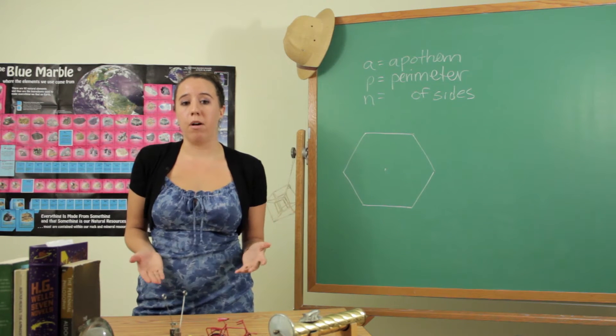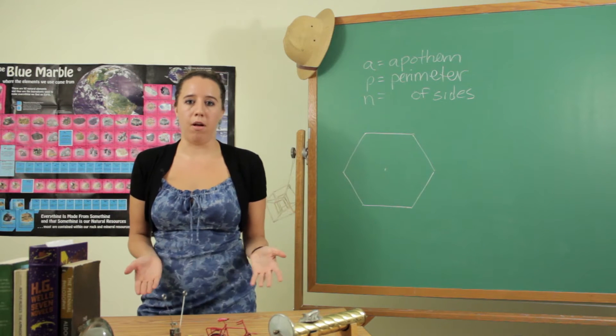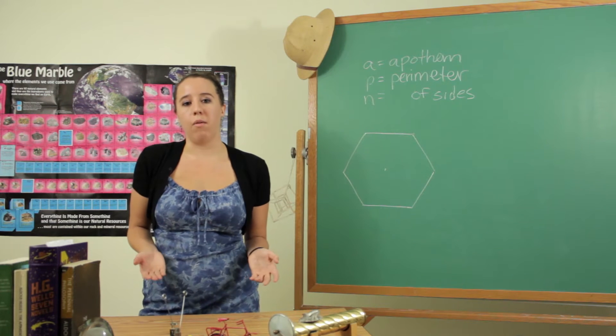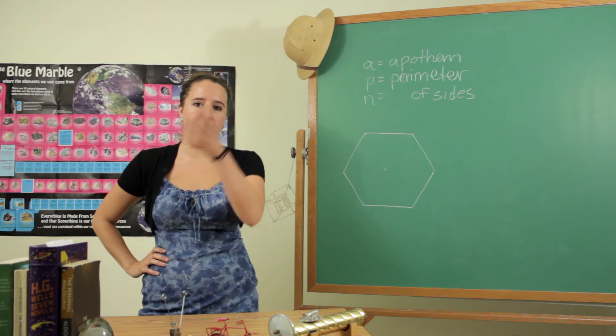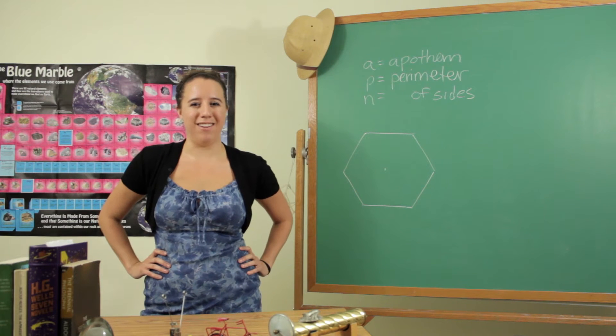But for a regular polygon it becomes even more simple than that because a regular polygon has equal sides and equal angles, so you only have to calculate one triangle and then just multiply it by the number of sides and that's exactly what we're going to do right now.